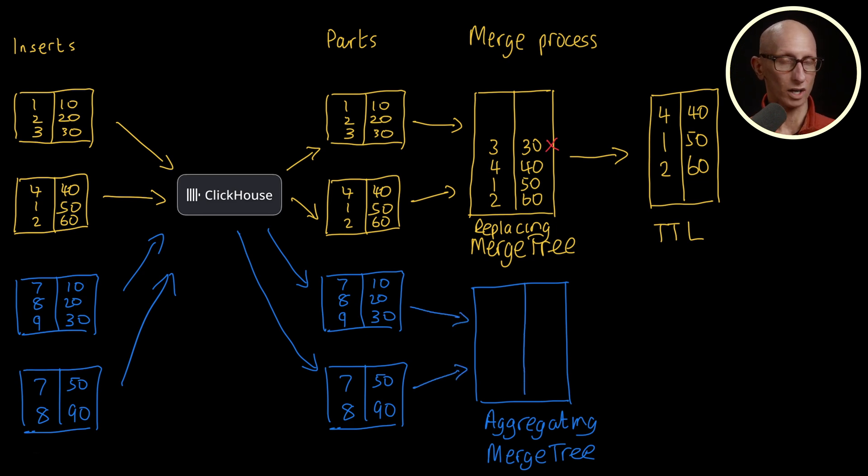So again, we have one copy of each primary key, but we sum the numeric values for rows that had the same key.